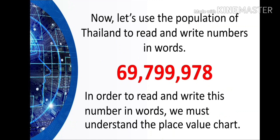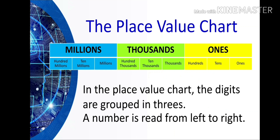In order to read and write this number in words, we must understand the place value chart. So here's the place value chart. In the place value chart, the digits are grouped in threes. A number is read from left to right. So take a look at it.